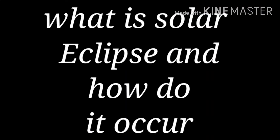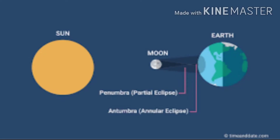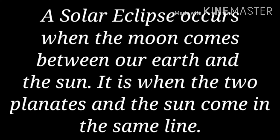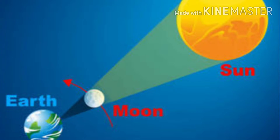Today's topic is solar eclipse. As we all know, today in Pakistan a solar eclipse happened. What is a solar eclipse and how does it occur? This diagram is showing you the solar eclipse. A solar eclipse occurs when the moon comes between the earth and the Sun — when the moon, earth, and Sun come in the same line.